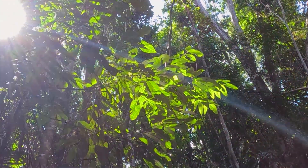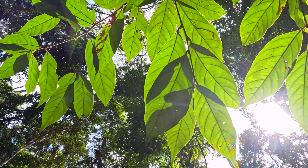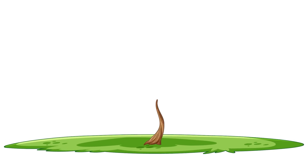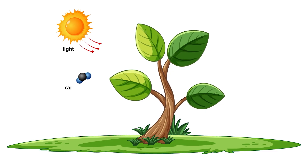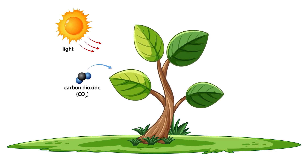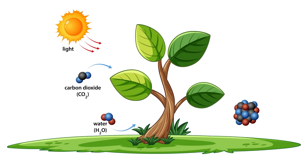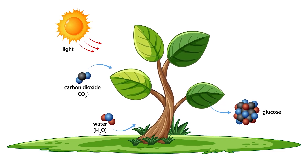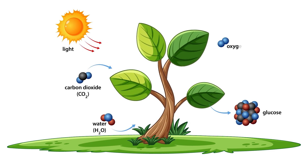On land, plants make their own food through the process of photosynthesis. They use sunlight's energy to turn carbon dioxide from the air and water from the soil into glucose, a type of sugar they use for energy. While doing this, they release oxygen into the air.